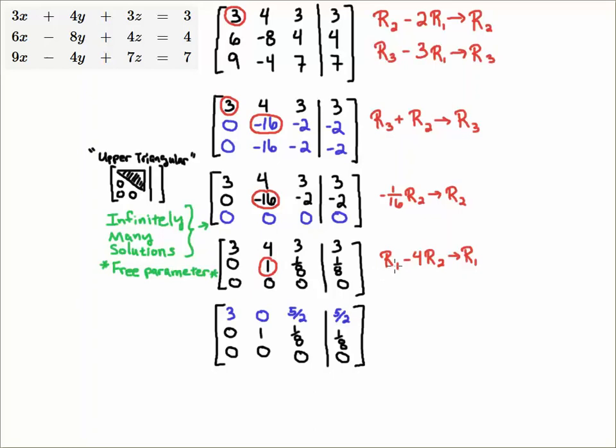Now that I have that 1 in that 2,2 entry I'm going to eliminate this 4. And I do that by taking now notice now I'm working upwards so it's going to be row 1 is going to get replaced by minus 4 times row 2. So I multiply everything in row 2 by minus 4 and I add it to row 1 and I replace row 1.